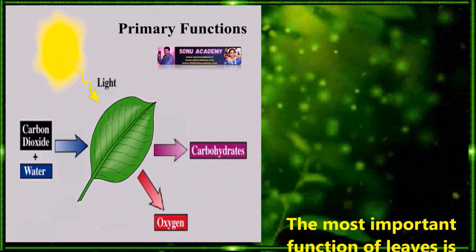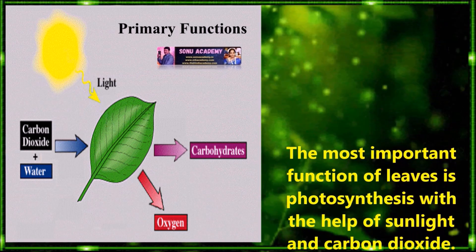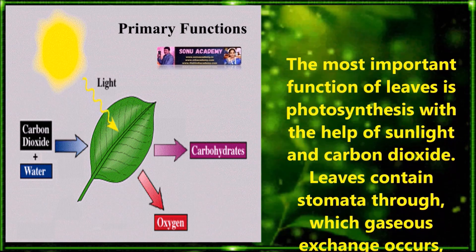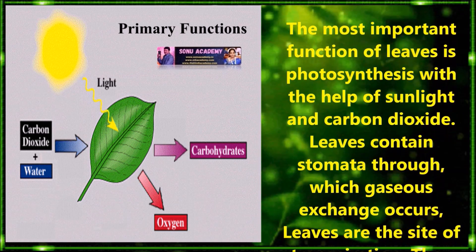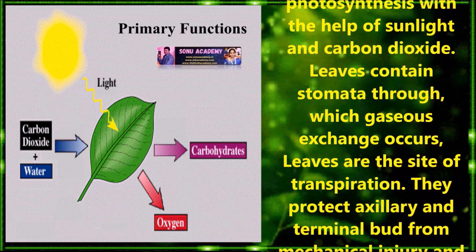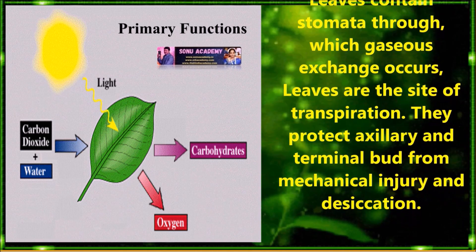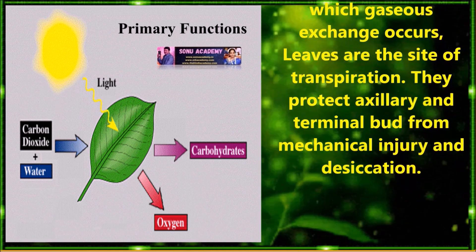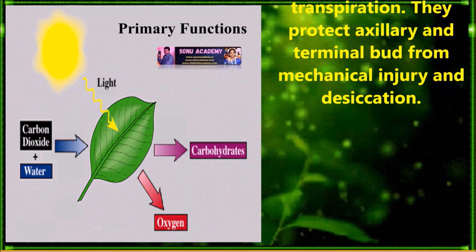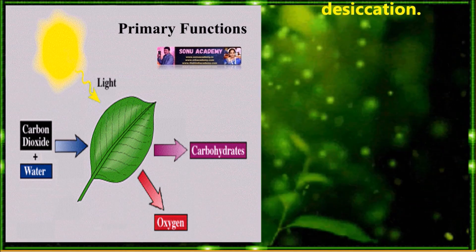Now let us discuss the functions of leaves. Leaves may have many primary and secondary functions. The most important function of leaves is photosynthesis with the help of sunlight and carbon dioxide. Leaves contain stomata through which gaseous exchange occurs, and leaves are the site of transpiration. Leaves also protect the axillary and terminal buds from mechanical injuries and desiccation.